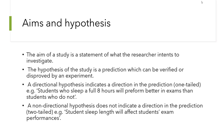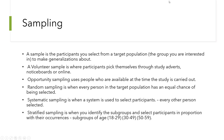A non-directional hypothesis does not indicate a direction in the prediction — this is called a two-tailed test. An example would be: the number of hours a student sleeps will affect student exam performance. There is no direction specified — it's not saying whether more or less sleep will affect performance, simply that the length of time will have an effect.